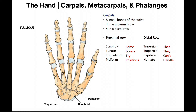One group is the carpals, which are the most proximal bones. We see those right here — short bones, kind of irregularly shaped. They almost look like pebbles or rocks that you see at the bottom of a fish tank. In the middle we have the metacarpals, and then most distally, the phalanges.